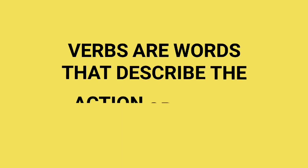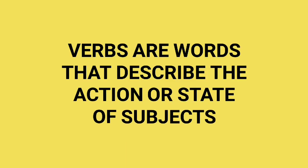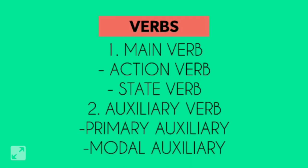Verbs are words that describe the action or state of the subject. Verbs are of two types: one is your main verb and the other is your helping verb or auxiliary verb. The main verbs are of two types: one is your action verb and the other is your state verb. The auxiliary verbs are also of two types: one is your primary auxiliary and the other is your modal auxiliary.